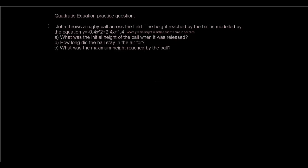So the question is, John throws a rugby ball across the field. The height reached by the ball is modeled by the equation y equals negative 0.4x squared plus 2.4x plus 1.4, where y is the height in meters reached by the ball and x is the time in seconds.